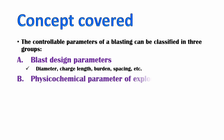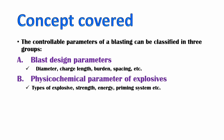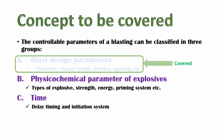The second group is the physiochemical parameters of explosives, which includes type of explosives, strength, energy, and priming system. The third one is time, which includes the delay timings and the initiation system. Among these, the blast region parameters we have already seen in our previous lectures. In the upcoming lectures we will see the explosives and the initiation system during blasting.